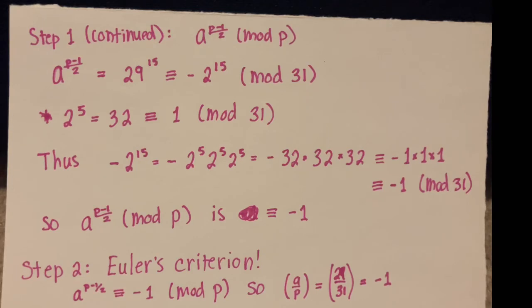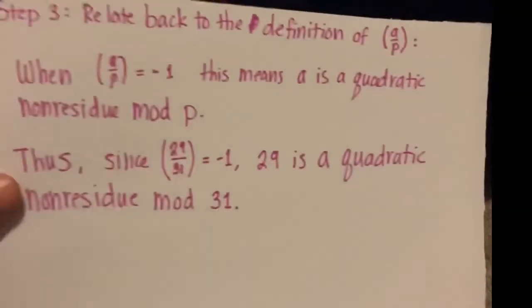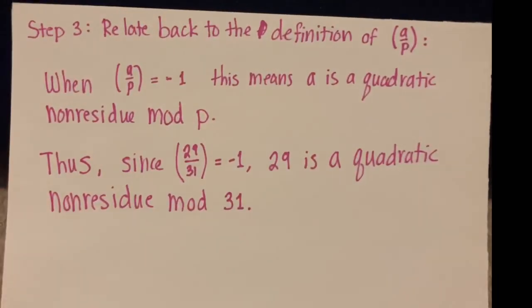And by Euler's criterion, this tells us that 29 on 31 is negative 1. So it tells us that 29 is a quadratic non-residue mod p. That was actually my next visual, but I already stated it.